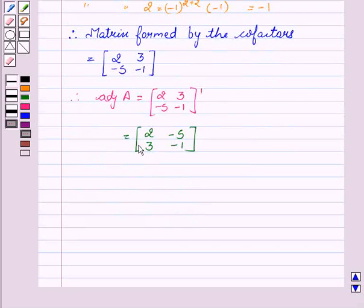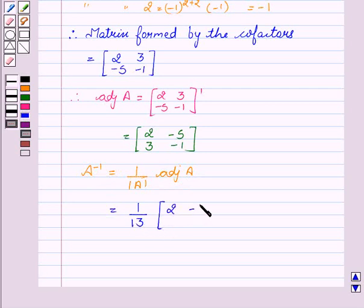Now we will find A inverse. A inverse equal to 1 upon determinant of A into adjoint of A, which is equal to 1 upon 13 into [2, -5; 3, -1].